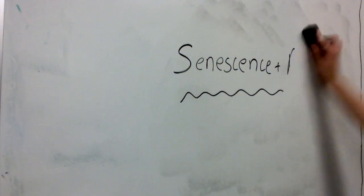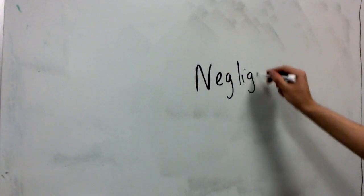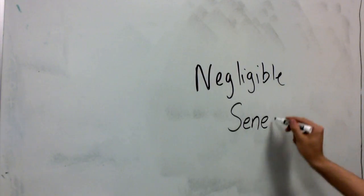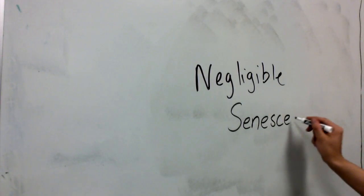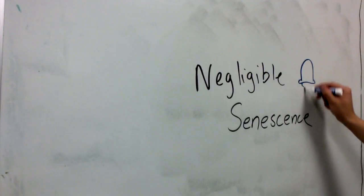The immortal jellyfish, on the other hand, has negligible senescence, where we see them regress back to the polyp stage instead of aging at all. Here, it's important to keep in mind that developmental regression of jellyfish results in the replacement of almost all of its cells, allowing it to bypass mutational accumulation in the damage sustained to its somatic cells.